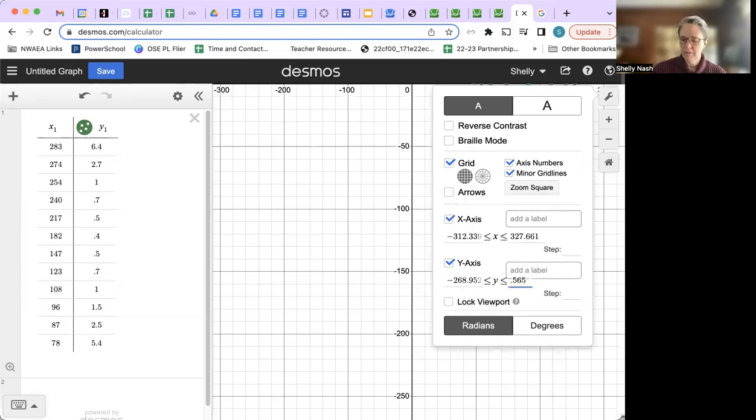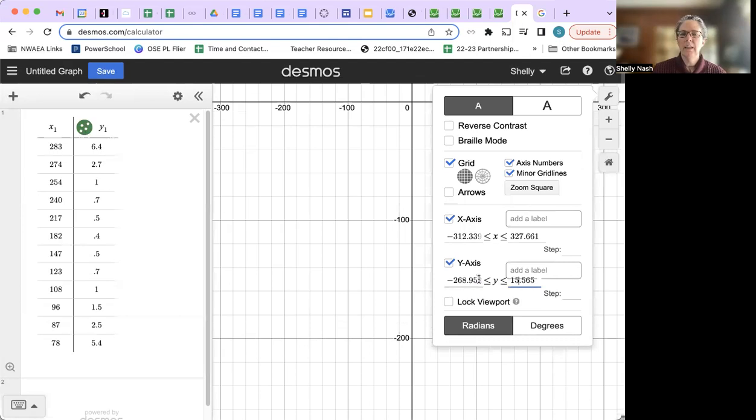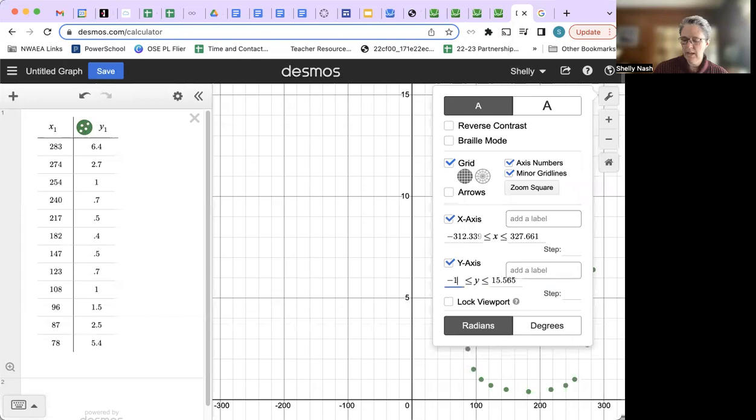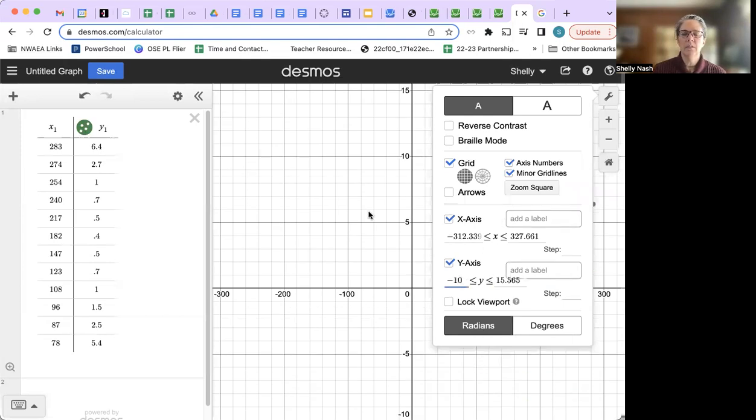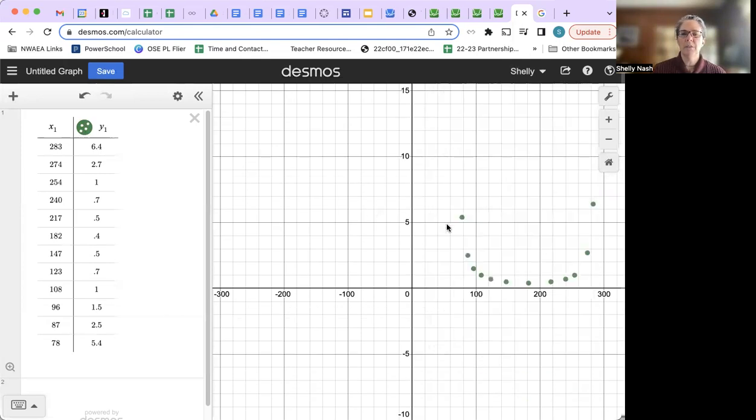If I made that be maybe 15 and then I made the negative x-axis be maybe negative 10, then it might look a little better on my graph. So there we go.